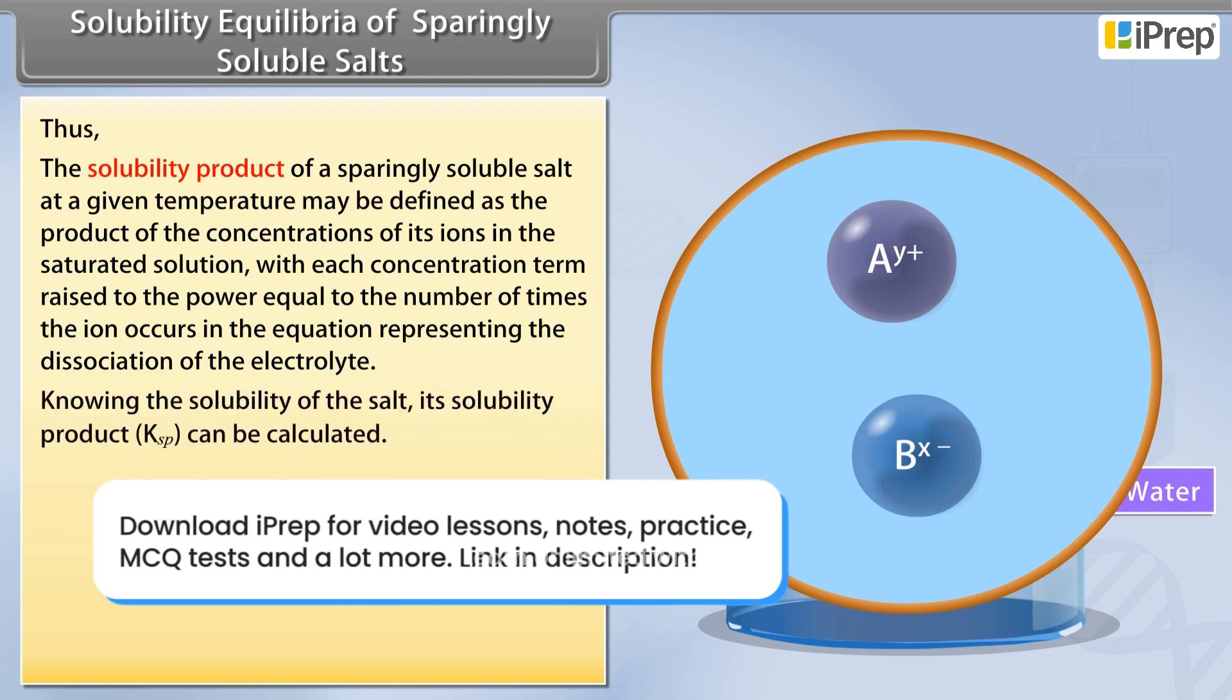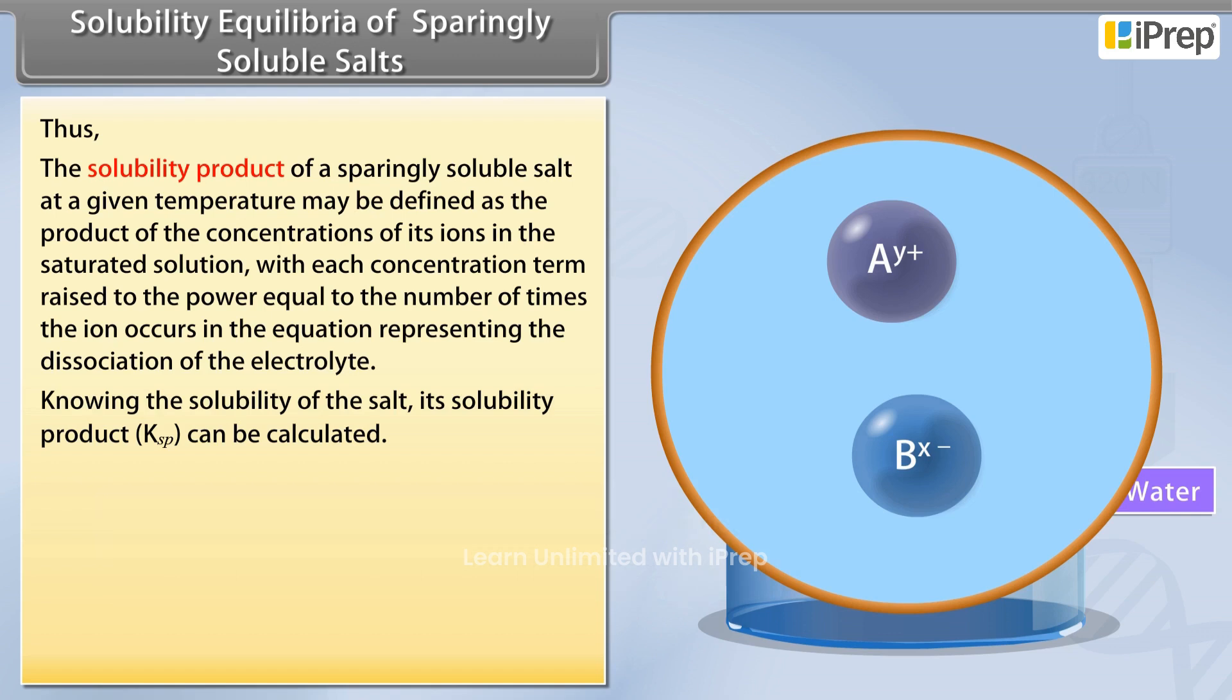Knowing the solubility of the salt, its solubility product can be calculated. For example, consider the salt AB. Suppose at a particular temperature its solubility is S mole L^-1. S moles of salts on ionization will give S moles of A^+ and S moles of B^-.